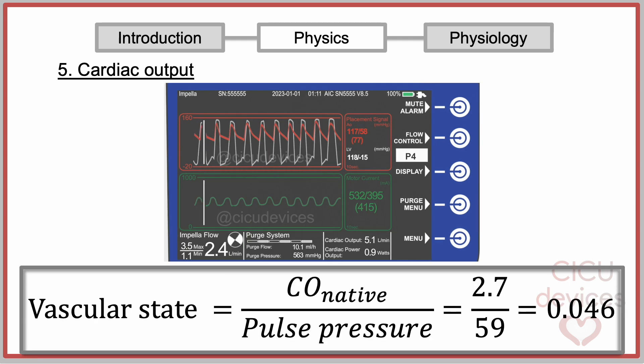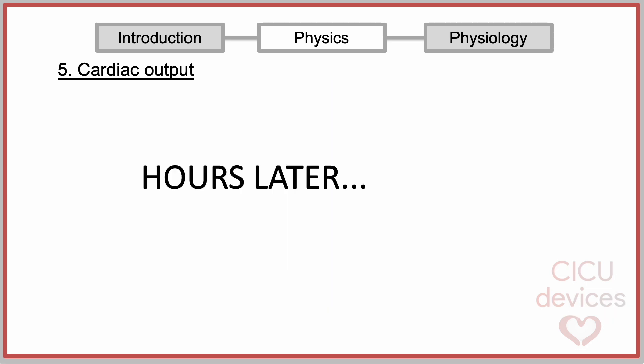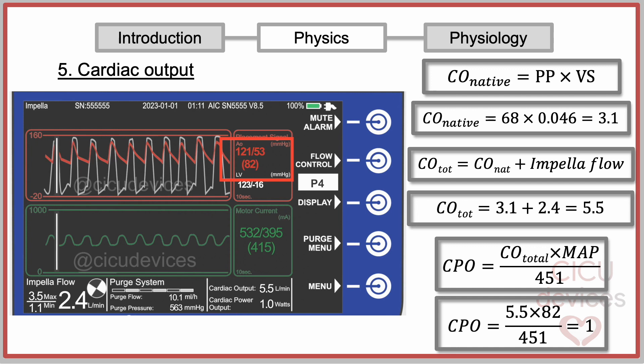Next, taking into account the pulse pressure at that moment, the device estimates the vascular state using the previously mentioned formula. In this way, the system will infer the native cardiac output, total cardiac output, and cardiac power output in real time over the next eight hours using the pulse pressure data.